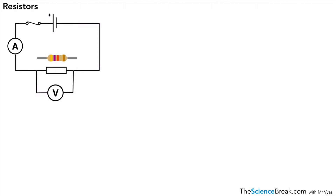We're going to take a look at three different resistors and examine the graph of the relationship between potential difference and current. For our first resistor, we have what's called a fixed resistor. It has a value that stays the same and does not change, so the resistance is constant.